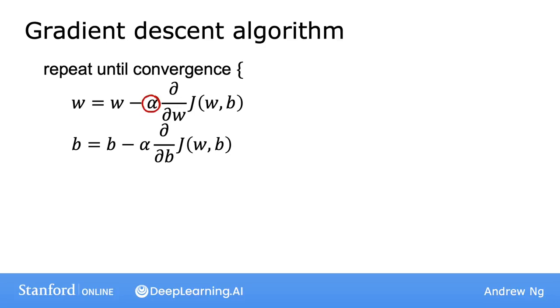Here's the gradient descent algorithm that you saw in the previous video. And as a reminder, this variable, this Greek symbol alpha, is the learning rate. The learning rate controls how big of a step you take when updating the model's parameters w and b. So this term here, this d over dw, this is a derivative term.